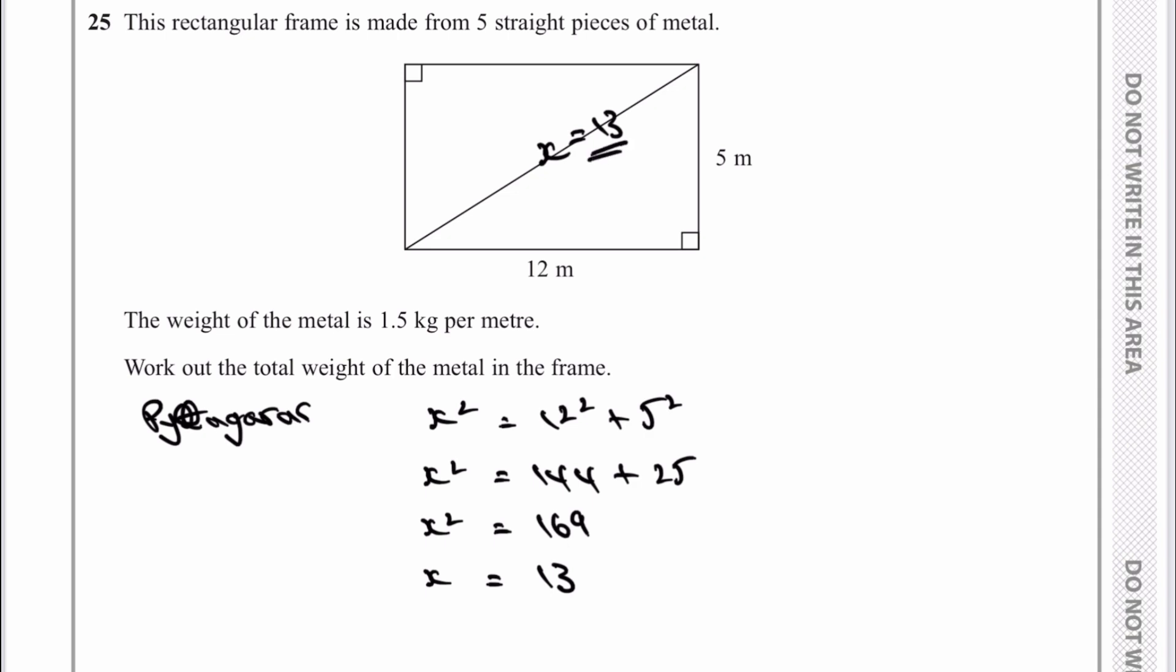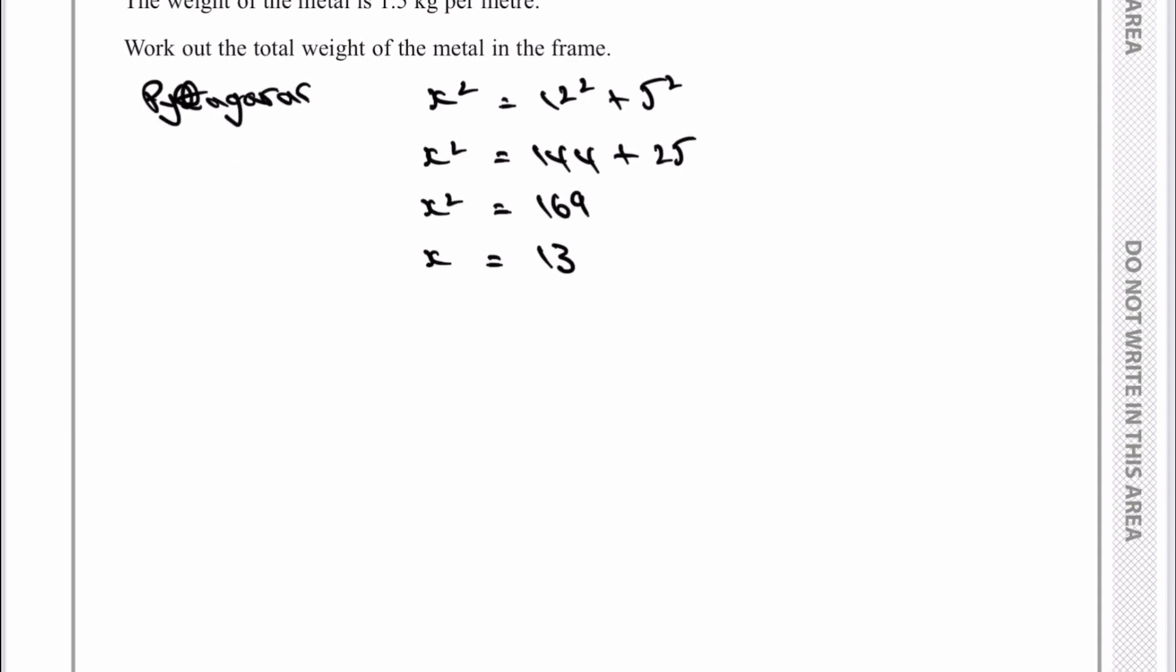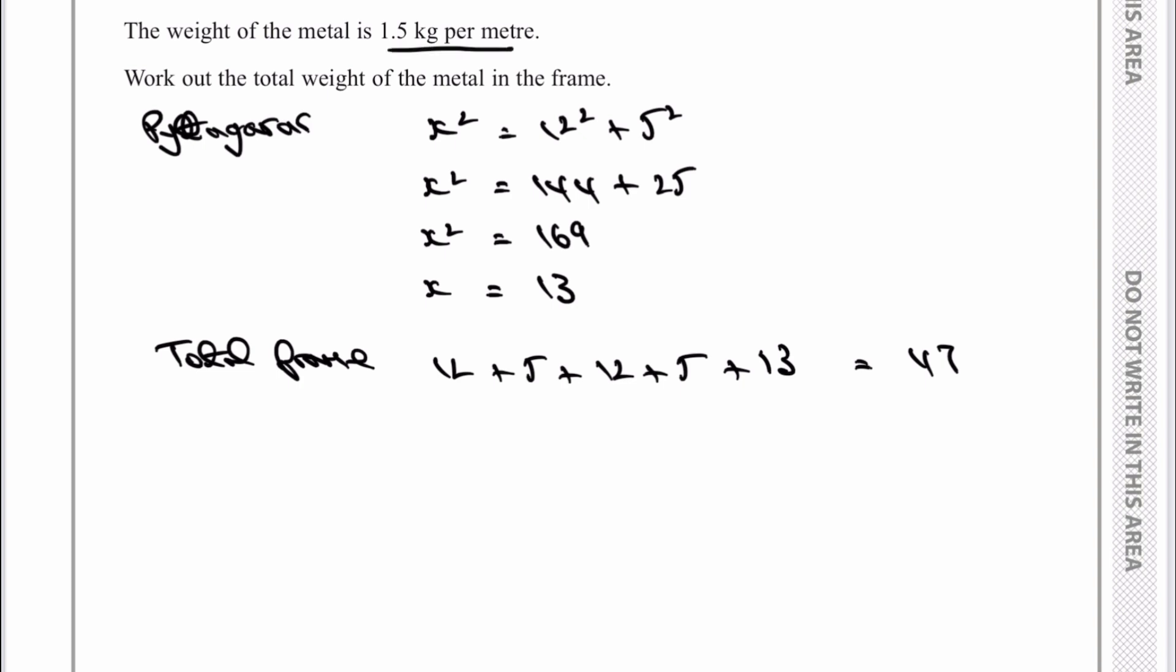Now we've got our five straight pieces of metal. We've got 12 at the top here, 5 at the sides, 12 at the bottom, and x for the hypotenuse, or 13 for the hypotenuse. So when I add all of those up, I've got a total frame length equal to 12 plus 5 plus 12 plus 5 plus 13, and that's going to equal 47. Now, it says the weight of the metal is 1.5 kilograms per meter. So therefore the total weight which we're being asked to calculate is going to equal 47 multiplied by 1.5, and that should give you 70.5 kilograms, which would be the answer to that particular question.